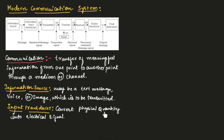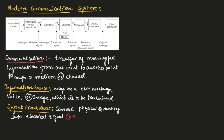The input transducer converts the message — such as a text message, voice message, or image — into electrical form so that it is easy to transmit over a channel. Since we cannot transmit these messages as they are, they are converted into electrical form. These electrical signals are known as baseband signals or message signals.